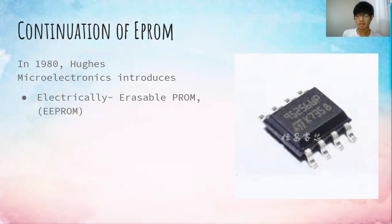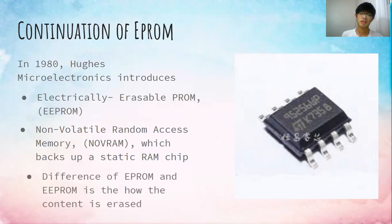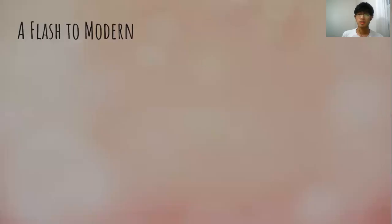Hughes Microelectronics also introduced non-volatile random access memory, NOVRAM, which backs up a static RAM chip. The difference between EPROM and EEPROM is how the content is erased: in EPROM the contents are erased through UV light, while in EEPROM the content is erased through an electric signal.